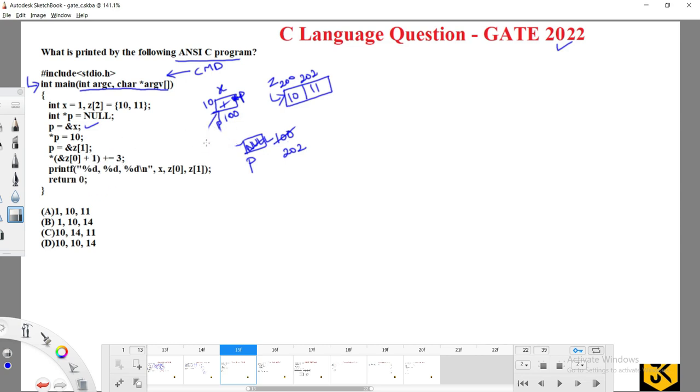Now they have given one more expression. This expression is an arithmetic operation: *(&z[0] + 1) + 1 + 1.